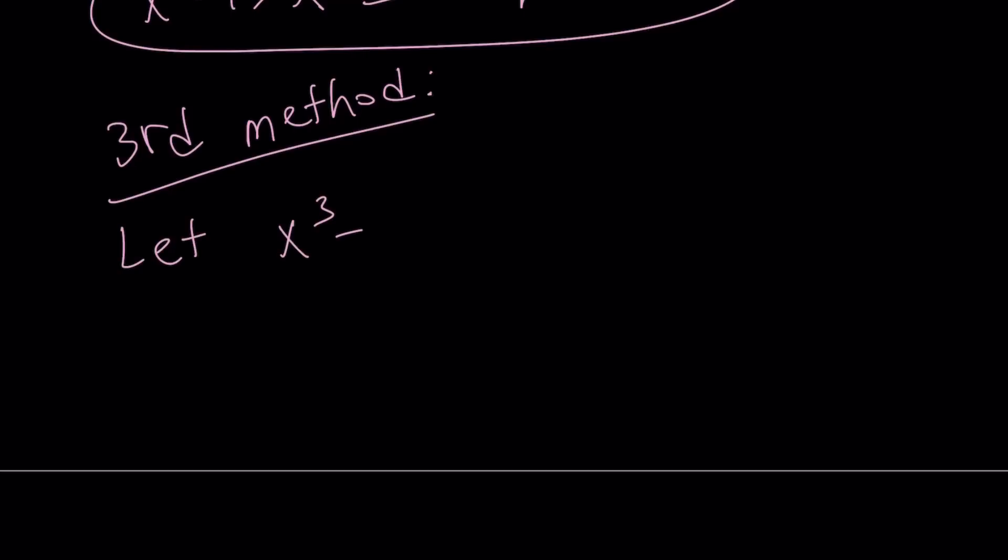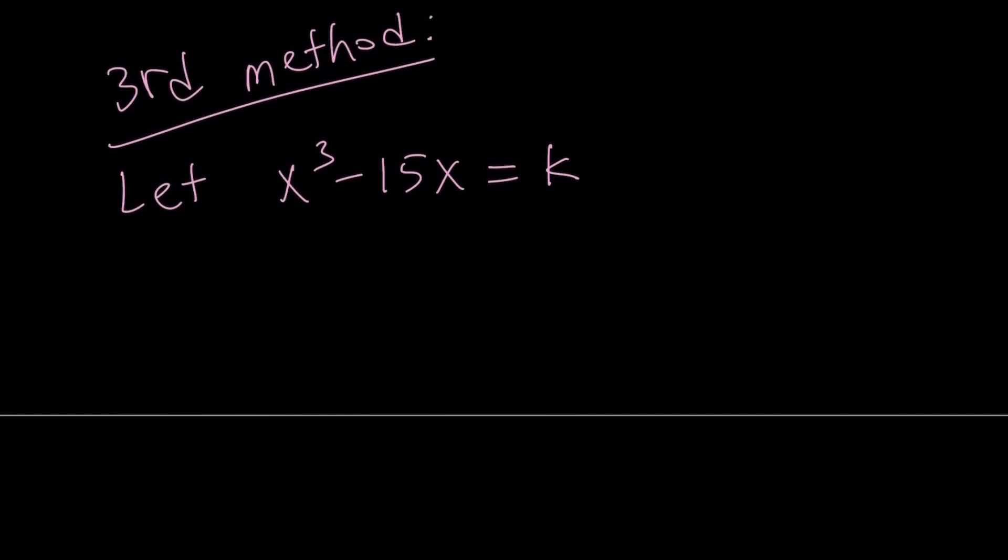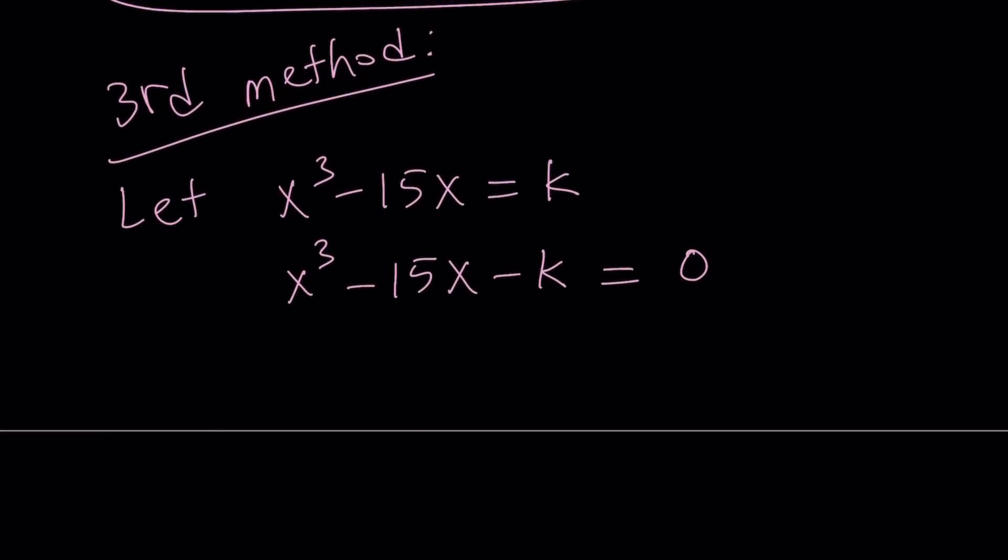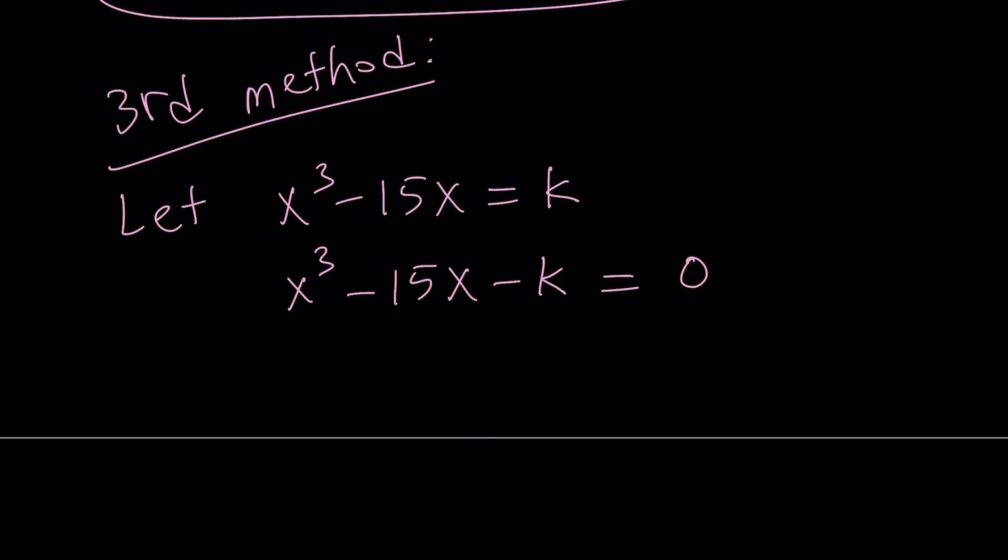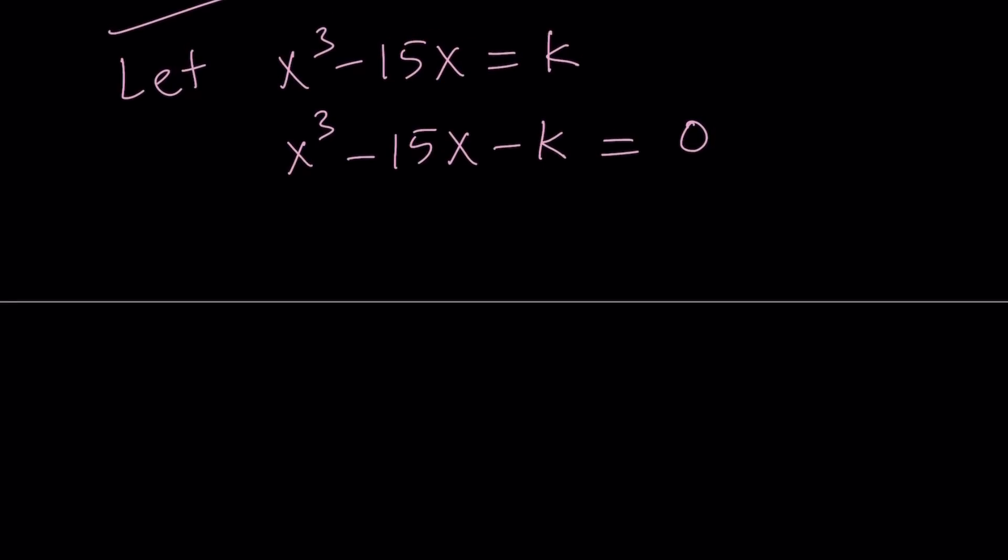So for my third method, I'm going to let x cubed minus 15x equal k. And obviously, this gives us a cubic equation if you put everything on the same side. So remember, I'm trying to find the value of x cubed minus 15x, given that x squared minus 4x is equal to negative 1. So if I find the k value, then I get the answer, right? That's what I'm looking for. So I'm looking for the k value. Let's put everything on the same side and solve for k. But I don't really have anything to solve for k here because it's a cubic and I can't solve for k from here. So I need to use the other information. What was the other information? The other information was that x squared minus 4x is equal to negative 1.